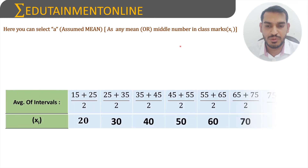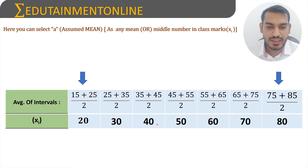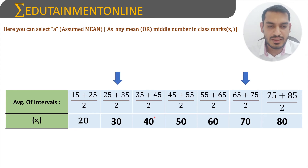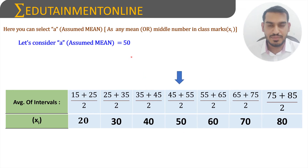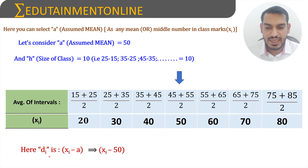We calculate the midpoints xi: 15+25/2 = 20, 25+35/2 = 30, 35+45/2 = 40, 45+55/2 = 50, 55+65/2 = 60, 65+75/2 = 70, 75+85/2 = 80. To find the assumed mean, we take the middle term from these values, which gives us 50. So a = 50 and the class width h = 25 − 15 = 10.